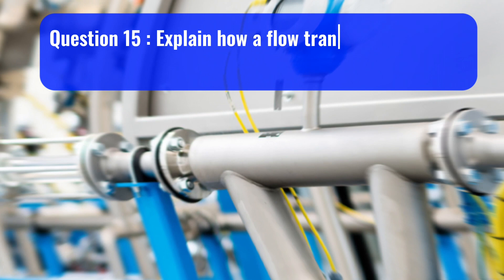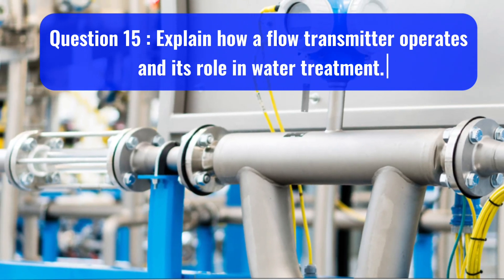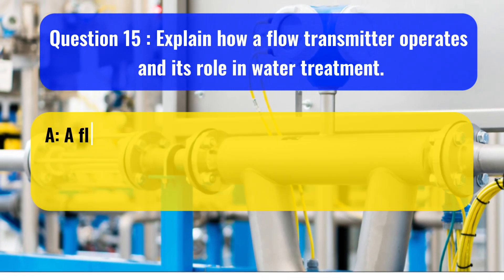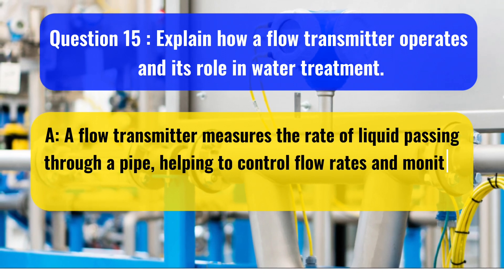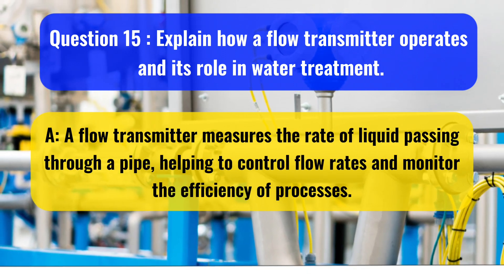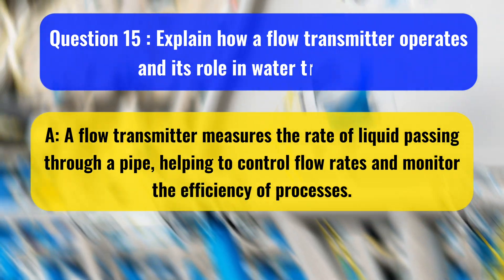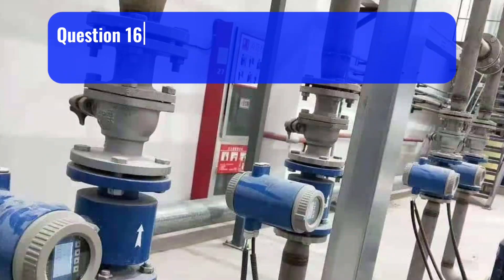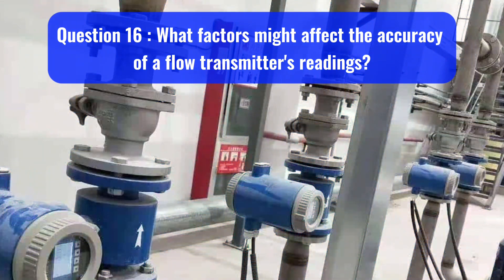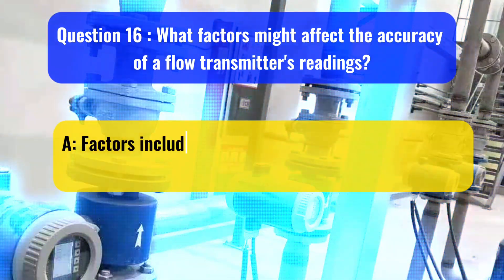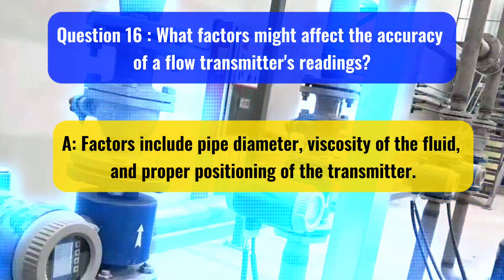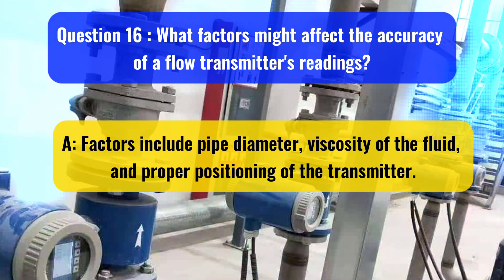Question 15: Explain how a flow transmitter operates and its role in water treatment. A flow transmitter measures the rate of liquid passing through a pipe, helping to control flow rates and monitor the efficiency of processes. Question 16: What factors might affect the accuracy of a flow transmitter's readings? Factors include pipe diameter, viscosity of the fluid, and proper positioning of the transmitter.